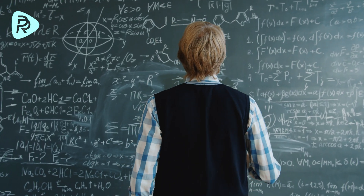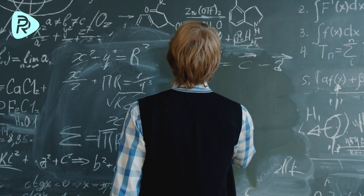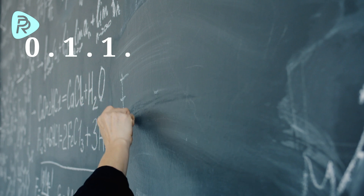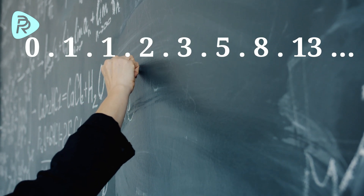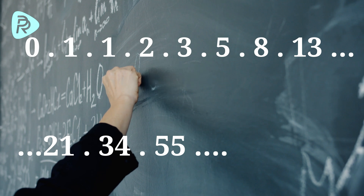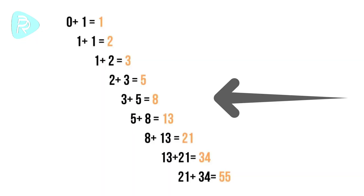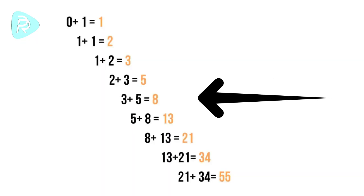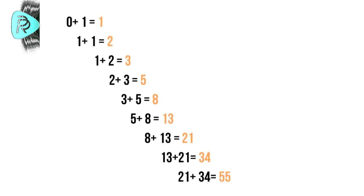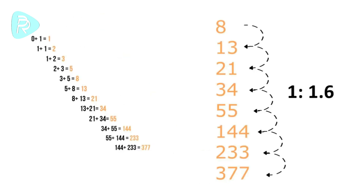Fibonacci found this sequence while trying to solve a problem and named it after himself. The Fibonacci sequence is: 0, 1, 1, 2, 3, 5, 8, 13, 21, 34, 55, and so on. Each number in the sequence is the sum of the last two numbers — for example, 8 is found by adding 3 and 5. If we divide any number in this sequence by the one before it, we will see that it always approaches the golden ratio.